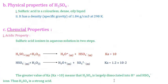Physical properties of sulfuric acid: H2SO4 is a colourless, dense, oily liquid with a density of 1.84 g/cm³ at 298 K (25°C). Chemical property — acidic nature: sulfuric acid ionizes in aqueous solution in two steps.